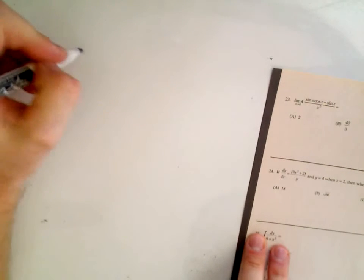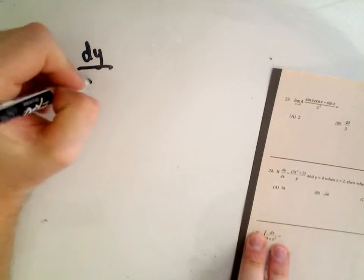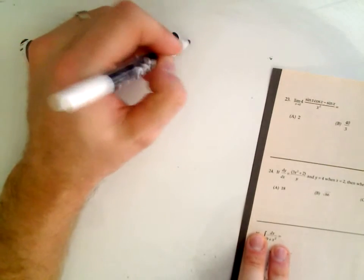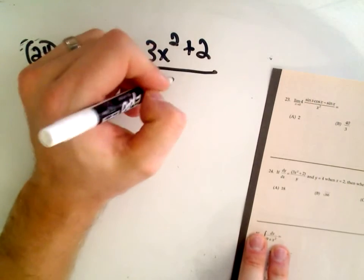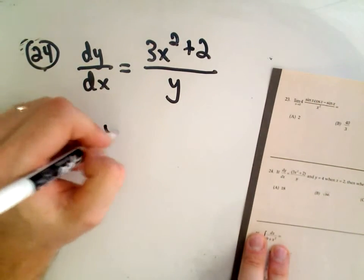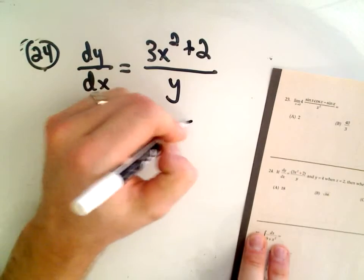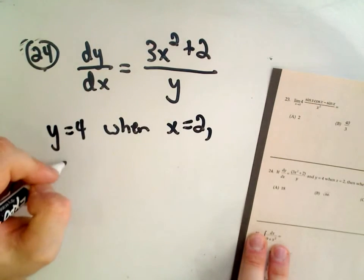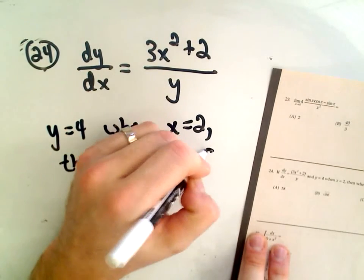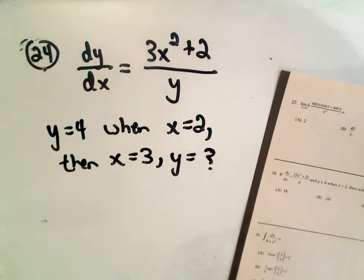Okay, the next problem here, number 24, it says if the derivative of y with respect to x equals 3x squared plus 2 over y, and it says y equals 4 when x equals 2, it says then when x equals 3, y equals what? That's what we're trying to figure out here.